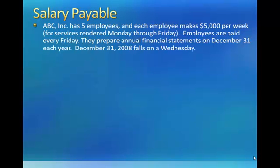As long as December 31st falls on a Friday, there wouldn't need to be an adjusting entry because you would be paying out the $25,000 at year-end. But for years where December 31st falls on a day other than Friday — if we assume December 31, 2008 falls on a Wednesday — there's a problem. Three days have been worked (Monday, Tuesday, and Wednesday), but employees haven't been paid yet; payment won't occur until Friday. Those three days' worth of expenses need to be accrued, and a liability must be set up. Otherwise, liabilities would be understated.